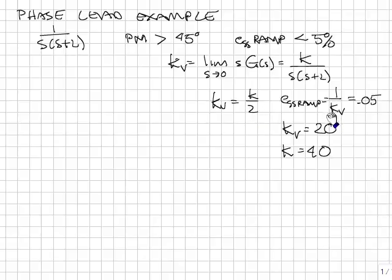Based on my definition for kv and the steady state error for a ramp, I have this relation here. The steady state error for a ramp is 1 over kv, which my spec is less than 0.05. So I'm just going to set it at the limit at 0.05. That means kv needs to be 20 and so k needs to be 40.